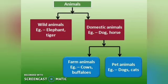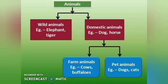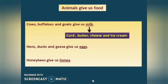In this video you have seen the different types of animals: wild animals and domestic animals. Under domestic animals we have two types — farm animals and pet animals. Examples of wild animals are elephant and tiger. Examples of farm animals are cows and buffaloes. Examples of pet animals are dogs and cats. Animals give us food: cows, buffaloes, and goats give us milk; curd, butter, cheese, and ice cream are made from milk. Hens, ducks, and geese give us eggs. Honey bees give us honey.